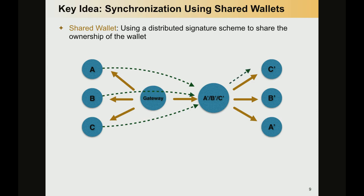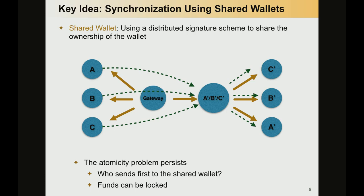They could redistribute it to C prime, B prime, and A prime in this case. But as some of you might have thought already, this doesn't solve the atomicity problem yet. The easiest way to see an attack would be that A first pays to the shared wallet, and then B and C just disconnect from the protocol. That means A will have paid, but the credit is locked in the shared wallet and there is no way to get it back.